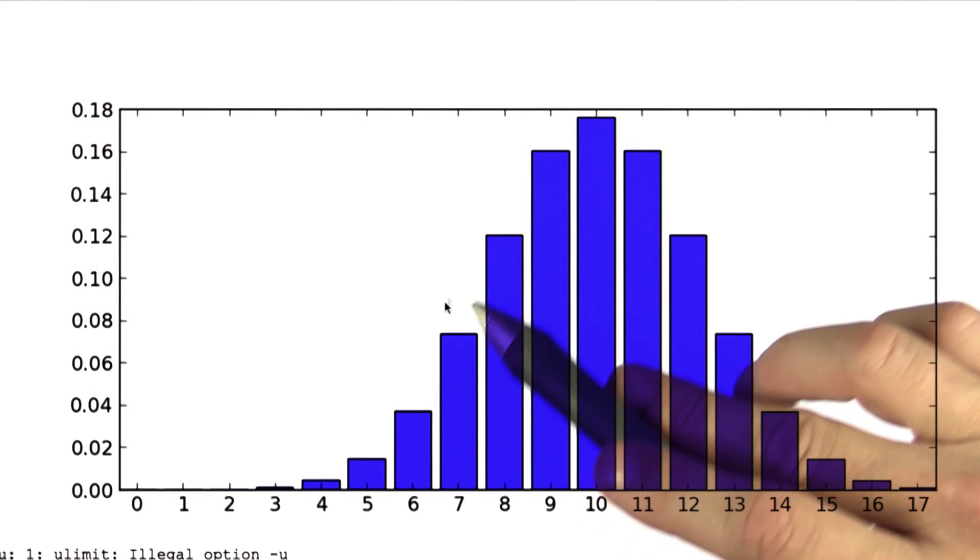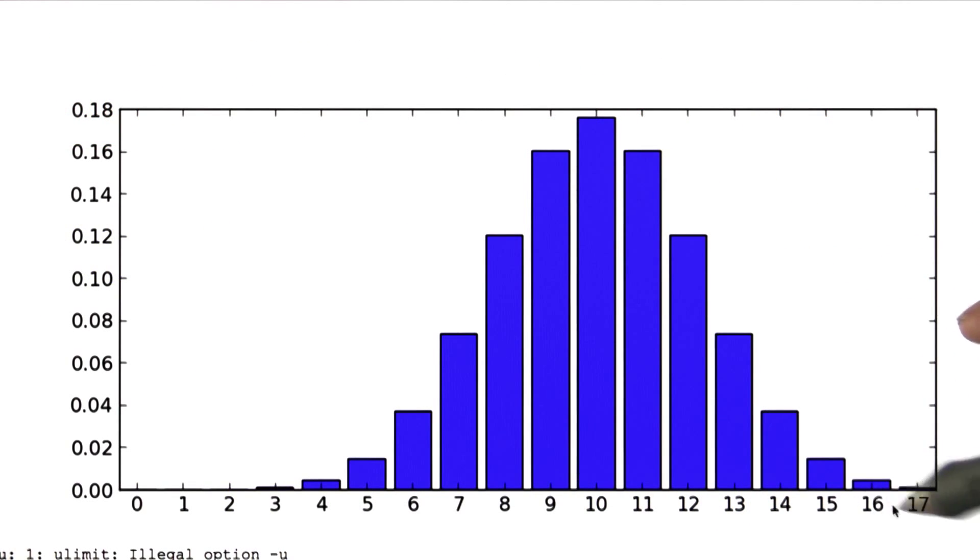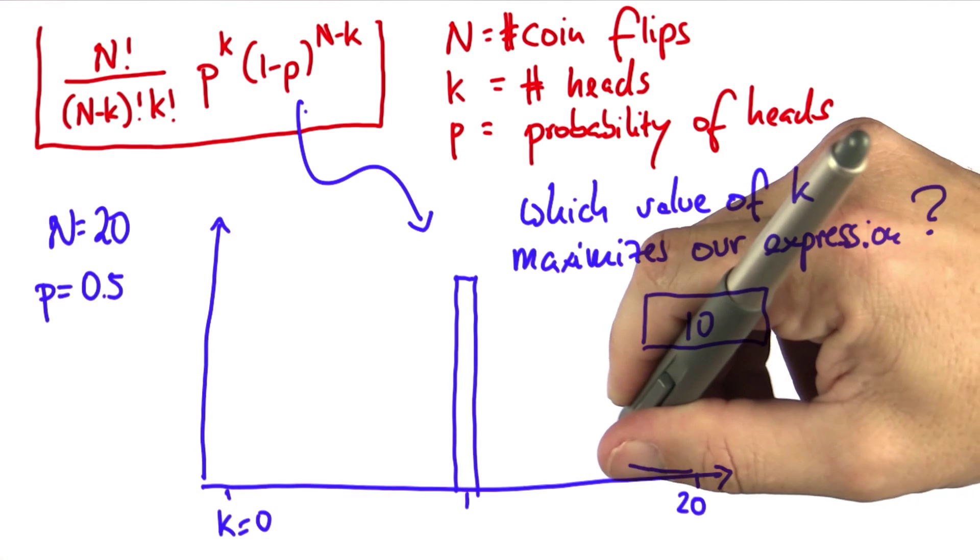The other interesting thing is things fall down in an interesting fashion as you deviate from 10, 11, 12, 13, 14, all the way to 0 or 20. So obviously we get a curve that looks a bit like this.